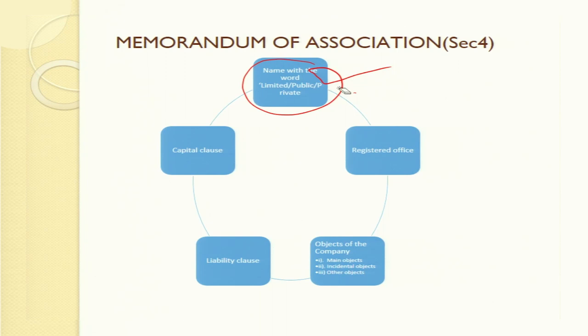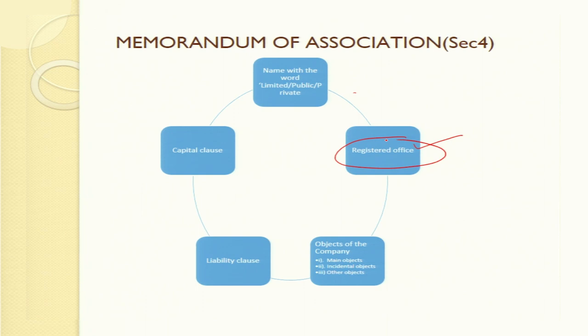Without the name of the company, there is no meaning to the company's existence. The second clause is the registered office clause. The registered office is one office designated as the registered office of the company. Even if a company has more than one office, this registered office is required to maintain communication with the company. Without this registered office, it is impossible to maintain communication. The registered office plays an essential role in the memorandum of association.